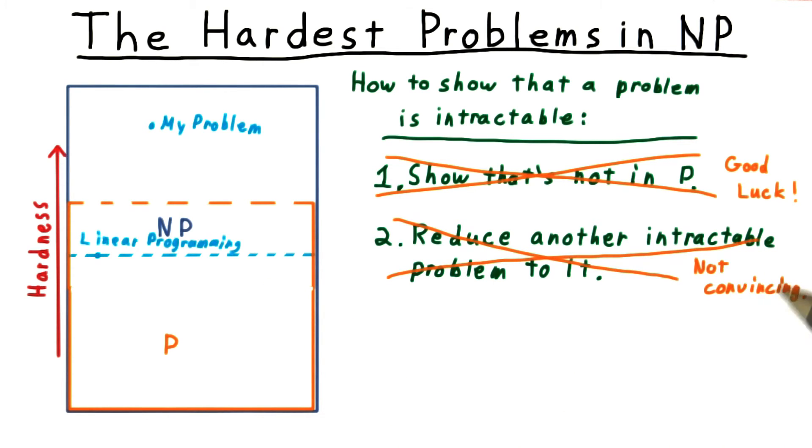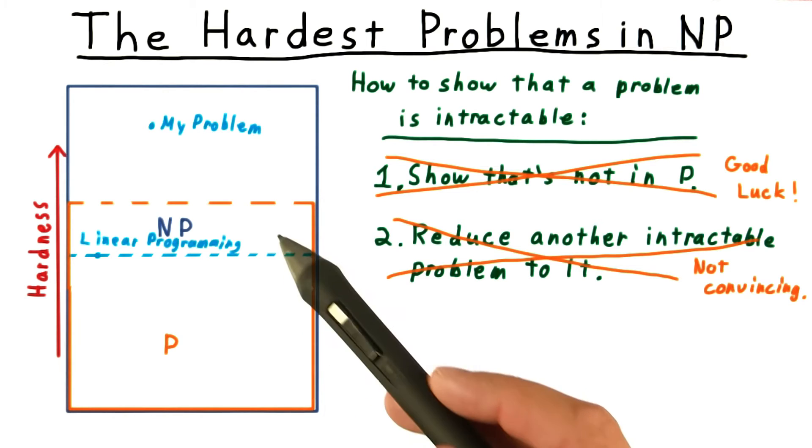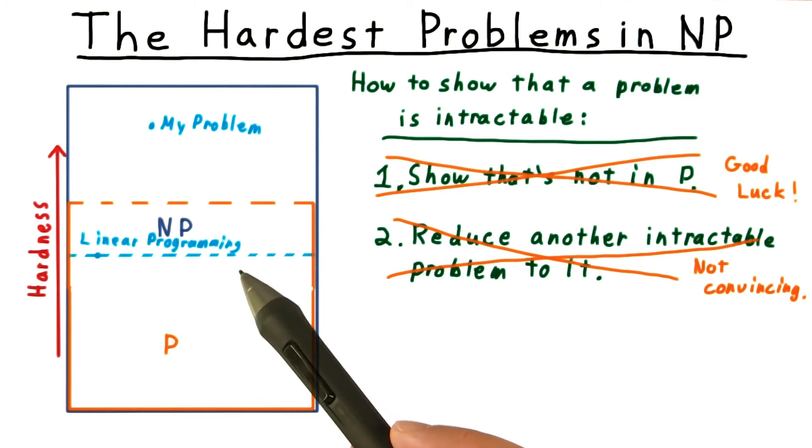The trouble with this approach is that it was later shown that linear programming actually was polynomially solvable. Hence, the fact that your problem is as hard as linear programming doesn't mean much anymore. The class P swallowed linear programming. Why couldn't it swallow your problem as well?